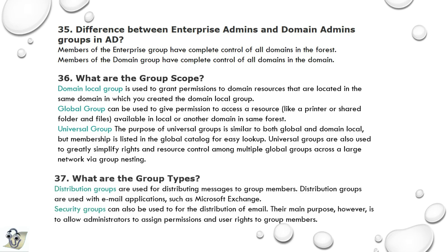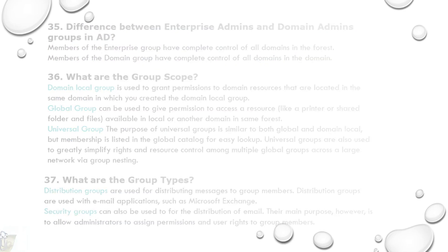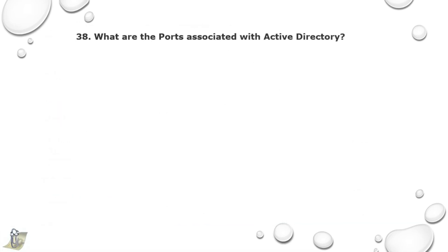37th question: What are the group types? Distribution groups are used for distributing messages to group members and are used with email applications such as Microsoft Exchange. Security groups can also be used for distribution of email, but their main purpose is to allow administrators to assign permissions and user rights to group members.